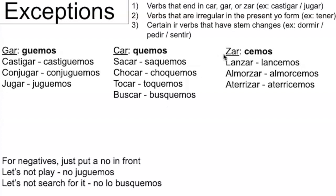And then -zar verbs change the Z to a C, becoming -cemos. So 'lanzar' — to throw — is 'lancemos.' 'Almorzar' is 'almorcemos.' And 'aterrizar' is 'aterricemos.' These would make more sense if you've already learned the subjunctive. For example, you can say 'espero que no juguemos baloncesto' — 'I hope that we don't play basketball.' So 'juguemos' is the same conjugation as the nosotros command.